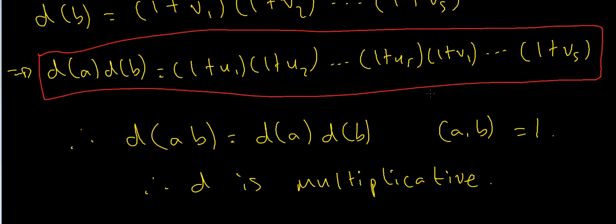So that's the proof that the divisor counting function is multiplicative. In the next series of videos, we'll look at a different function, sigma(n), which is the sum of the divisors, and we'll see if that function is also multiplicative and examine some nice formulae for it as well. If you liked this video, please leave a like, a comment, and subscribe for more content like this.